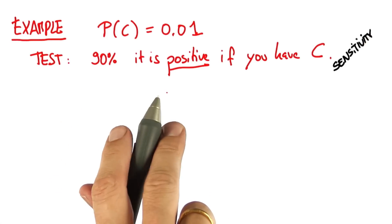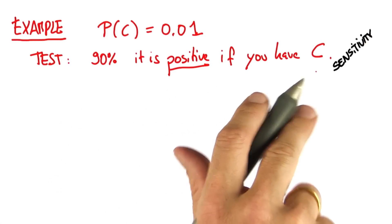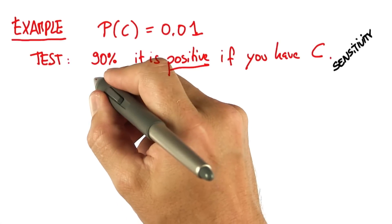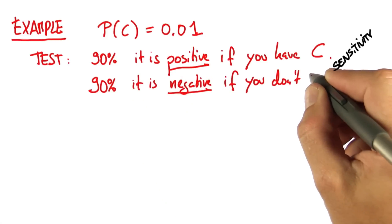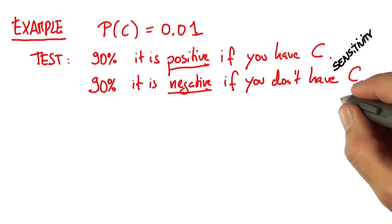But the test sometimes is positive even if you don't have C. So let's say with another 90% chance, it is negative if you don't have C. That's usually called the specificity.